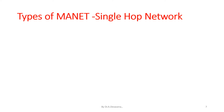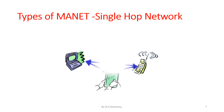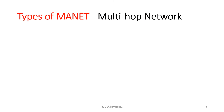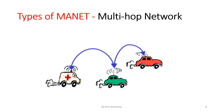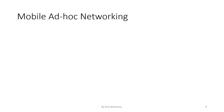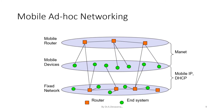Types of MANET: A single-hop network representation is shown — the electronic devices connected between them form a single-hop based network, as indicated in the diagram. A multi-hop network representation is also shown, where we have more than one hop, as indicated in the diagram. Additionally, a mobile ad hoc networking representation shows a mobile router, mobile devices, fixed network, the router, and end systems indicated appropriately.